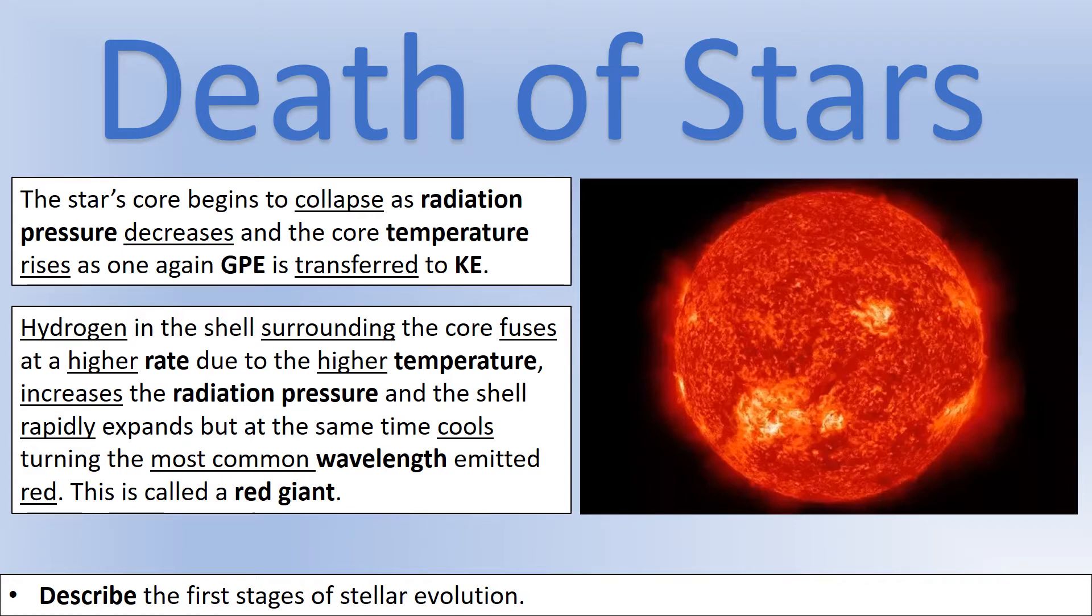So once that starts to happen, we start transferring more gravitational potential energy into kinetic energy. So the core temperature starts to rise. And what that enables to happen is the hydrogen surrounding the core is now high enough temperature to start to fuse at a higher rate. And that creates a massive radiation pressure and that shell expands, but at the same time cools down because it's expanding. So that's why it becomes a red giant, because essentially the wavelength it is emitting goes from being white predominantly to being predominantly red.